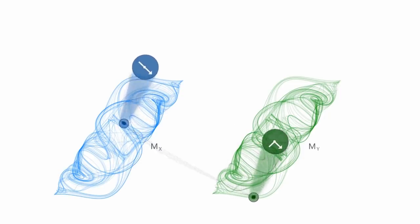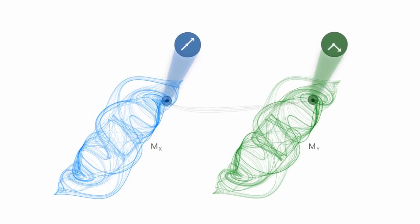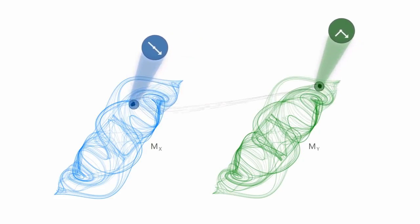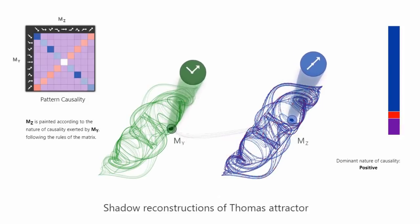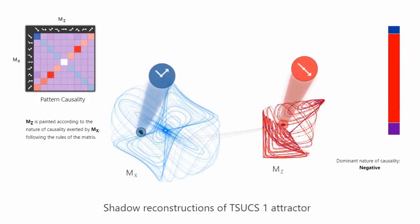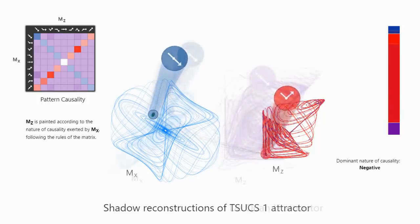We call our algorithm pattern causality, and it enables not only the identification but also the quantification of the nature of causality, be it positive, negative, or even dark.